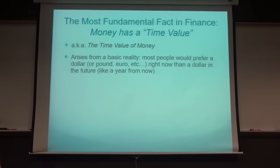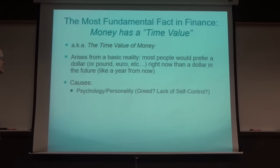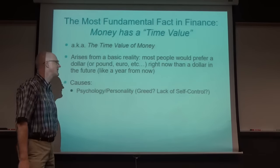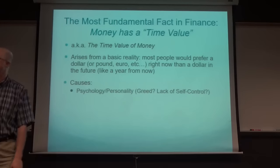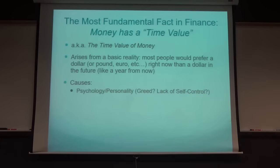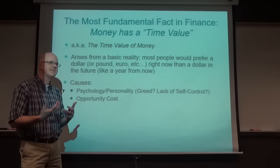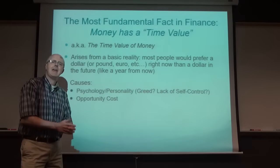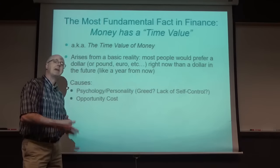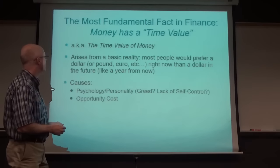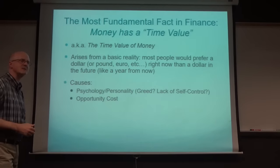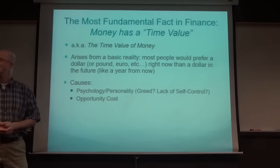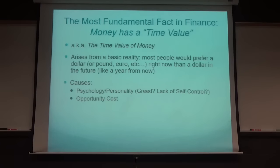What are the causes of this? Well, psychology and personality - people's greed. They want to have their money right now and can't control themselves; they need to go buy something with it right away. There is also something called opportunity cost, meaning they could take this dollar today and invest it, make money off their money, or use it to start a business.